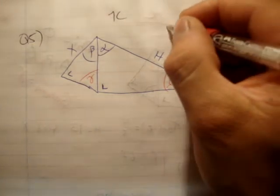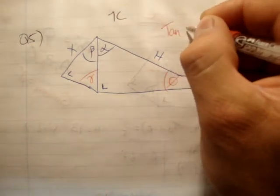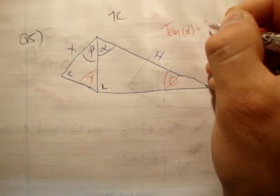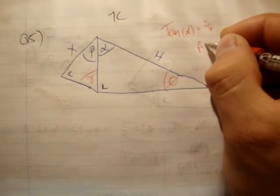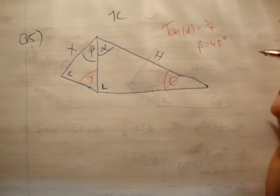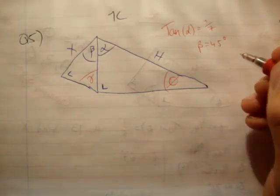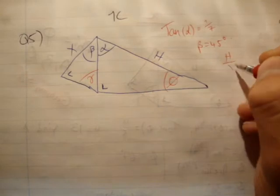So what are we given? We're given that tan of alpha is equal to 1 over 7, that beta is equal to 45 degrees, and we're asked to find the ratio of h to x.